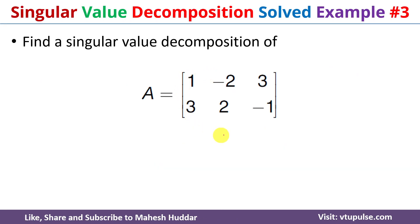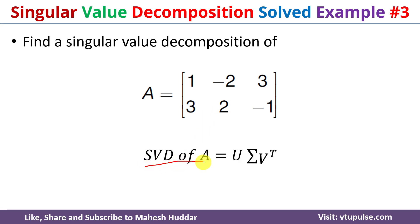This is the given rectangular matrix on which we will find the singular value decomposition. To find the SVD we use the formula: SVD of A equals U times sigma times transpose of V. Here U is the left singular matrix, sigma is the singular matrix, and transpose of V is the right singular matrix.